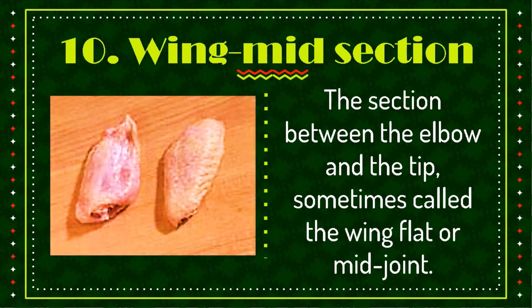Wing midsection. This is the section between the elbow and the tip, sometimes called the winglet flat or midjoint.